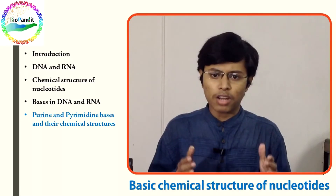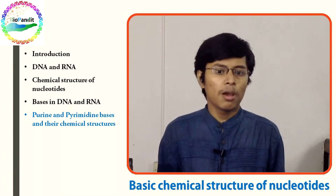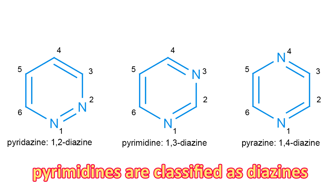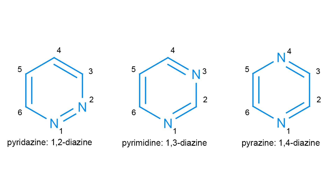Let's start with pyrimidine. Pyrimidine is an aromatic, heterocyclic organic compound. From the perspective of biochemistry, pyrimidines are classified as diazines. Diazines are heterocyclic aromatic rings that involve four carbon and two nitrogen atoms constructing a benzene ring. Based on the positions of the nitrogen atoms, there are three isomers of diazines.